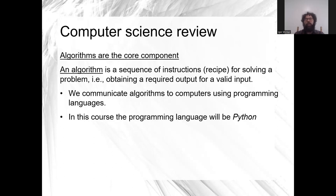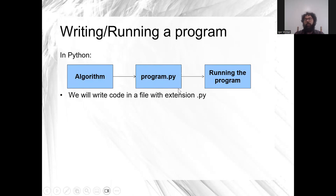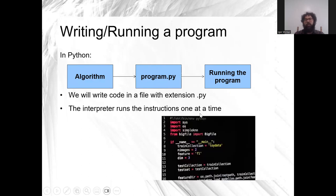To communicate an algorithm to a computer, we use a programming language — in this case, Python. We write the algorithm as a program in a file called file.py, then run it. An interpreter runs the instructions one at a time.